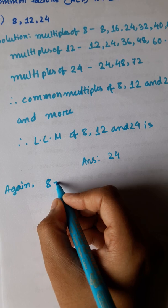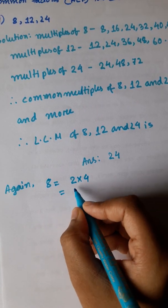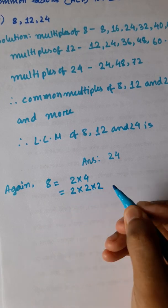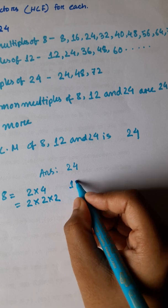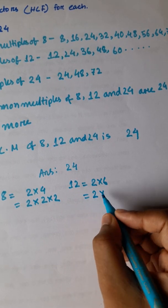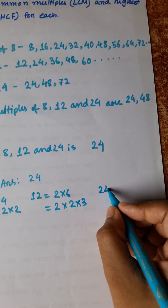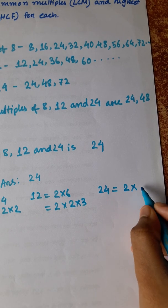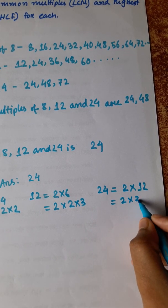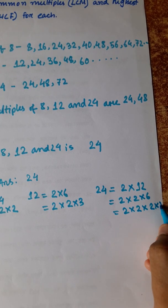Now for prime factorization: 8 = 2 × 4 = 2 × 2 × 2. 12 = 2 × 6. And 24 = 2 × 12 = 2 × 2 × 6 = 2 × 2 × 2 × 3.